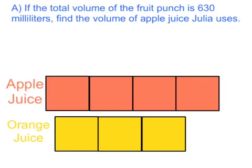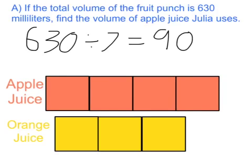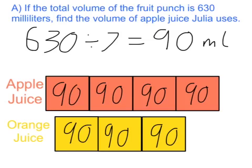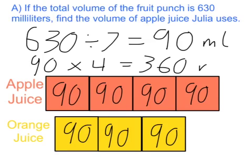To find that out, we will do 630 divided by 7, and that equals 90. So each one of these parts is 90 milliliters. If you added up all these parts of 90 milliliters each, we would have the total of 630 milliliters. It becomes obvious how much apple juice she used: she used 90 times 4 milliliters of apple juice, which is 360 milliliters.